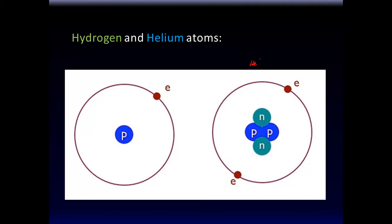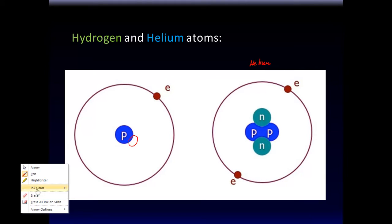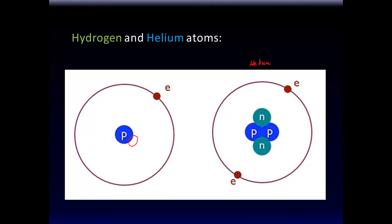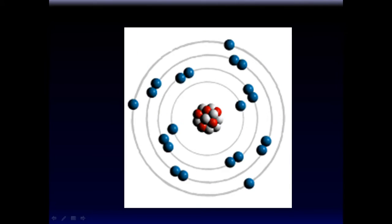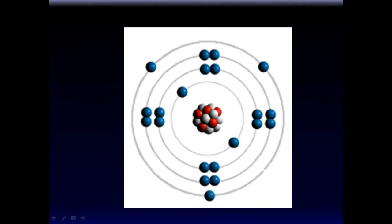This is the hydrogen atom with one proton and one electron. This is a helium atom — it has two protons, two neutrons, and two electrons. Note that a hydrogen atom commonly does not have a neutron. The number of protons in an atom equals the number of electrons in an atom, but the number of neutrons may vary.